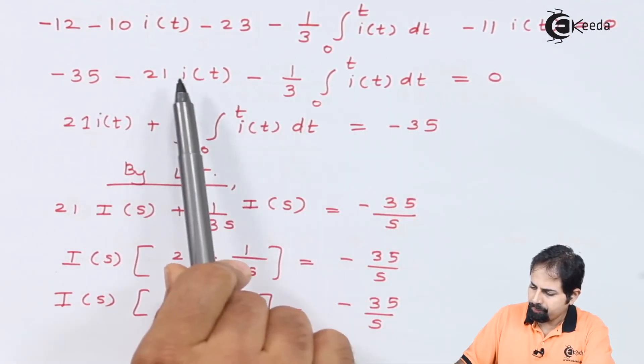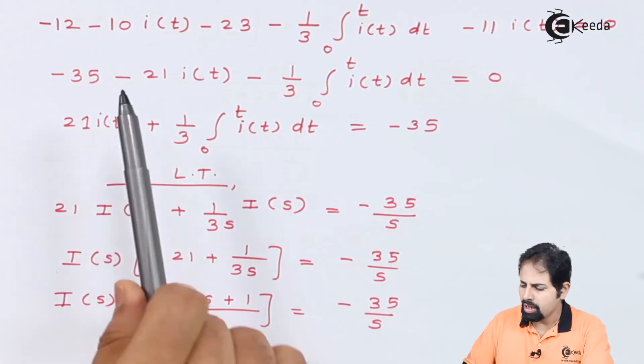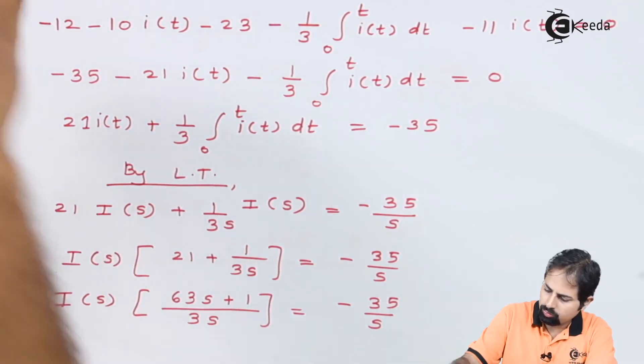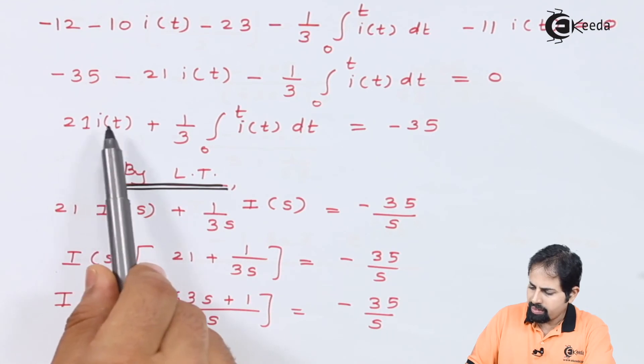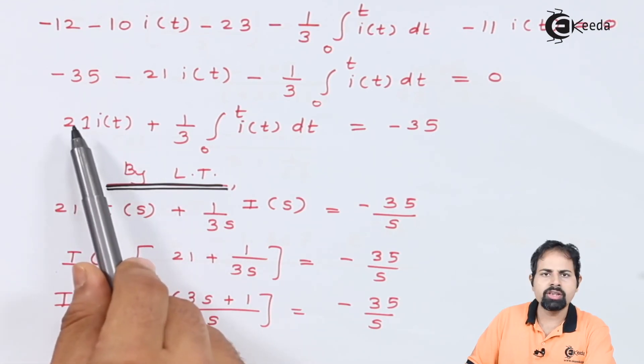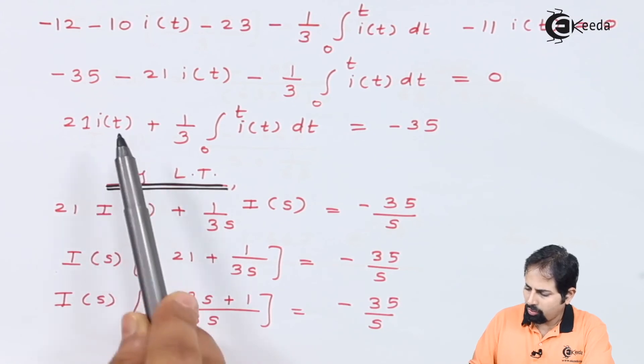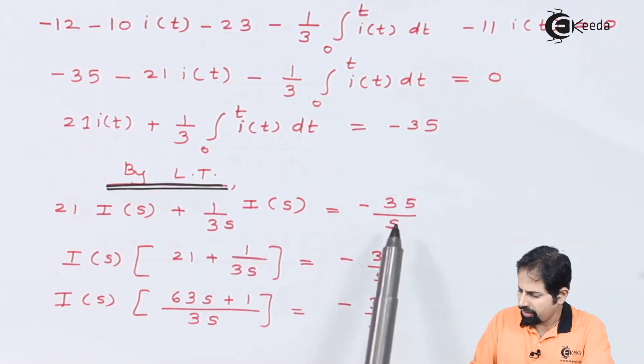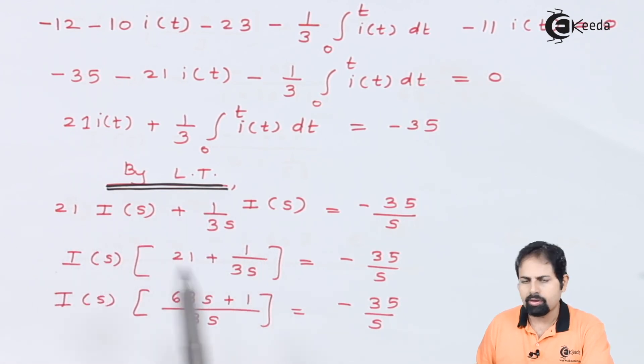So if I change the sign, here plus and plus, everything will become plus, and 35 goes to right hand side, it becomes minus 35. So 21 into i(t) plus 1 by 3 integration equals minus 35. Now if I apply Laplace transform, this is the equation which we get after applying Laplace transform. I will get 21 into I(s), because 21 is the total value of resistance. This 21 is what I got from 10 and 11 added. So 21 into I(s) plus 1 by 3. Laplace transform of this integration will be 1 by s into I(s), equal to minus 35 divided by s.